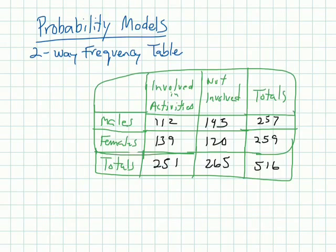Two-way frequency tables are going to have a little more data than we have had before. So if we look at the top, let's look at this column here first. We have information about males, females, and then totals.